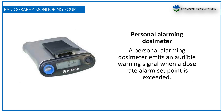A personal alarming dosimeter emits an audible warning signal when a dose rate alarm set point is exceeded. It is very important to understand how to protect workers when working around high-frequency radiation and to be aware of ways to reduce the level of radiation exposure.